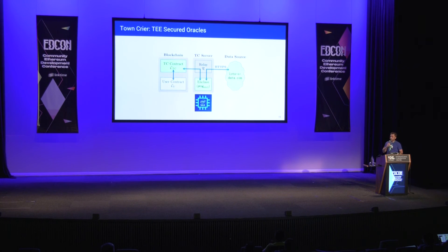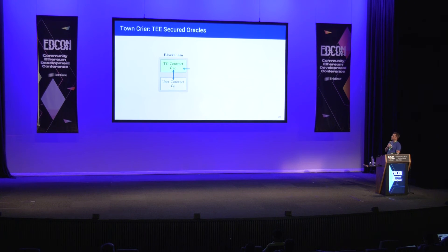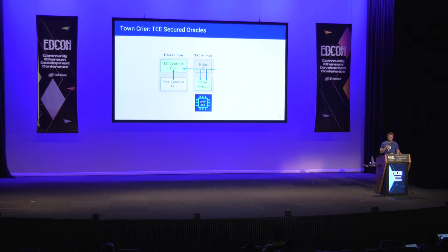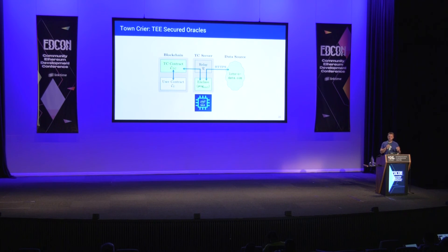Town Crier works pretty much like a current smart contract does. You've got a user requesting contract that talks to the Town Crier contract. Smart contract code runs in the enclave — there are a few different options for what's in there. In this example, it's talking to a data endpoint, processing a bunch of data points, and then feeding that back into the smart contract.